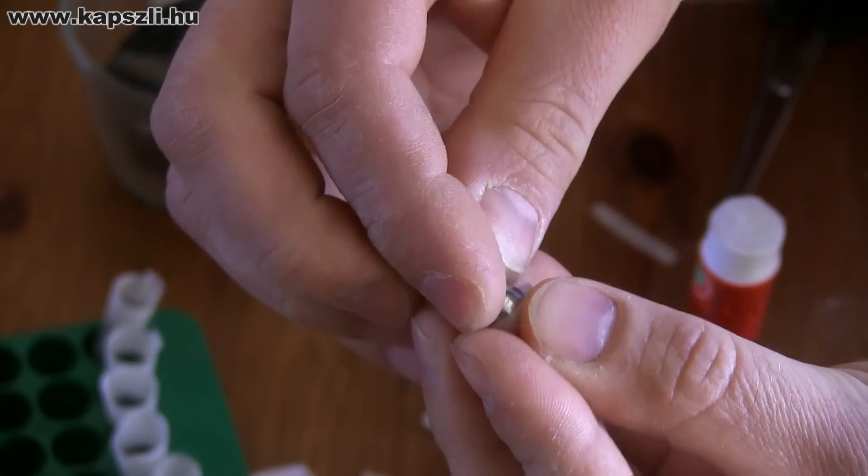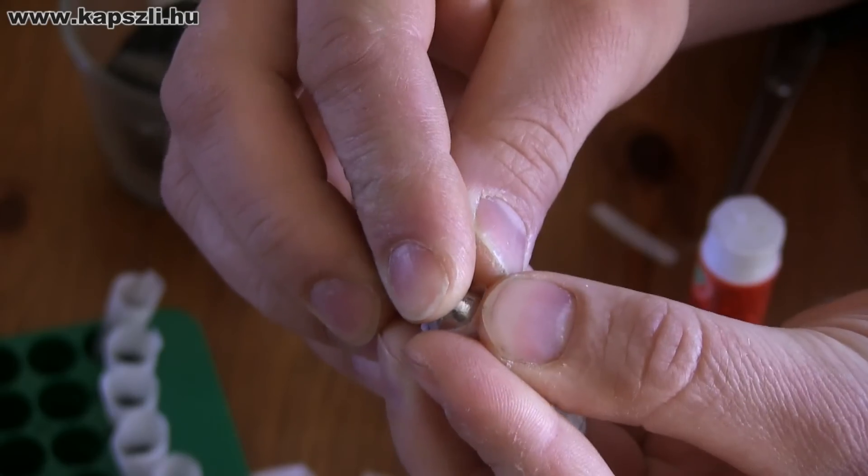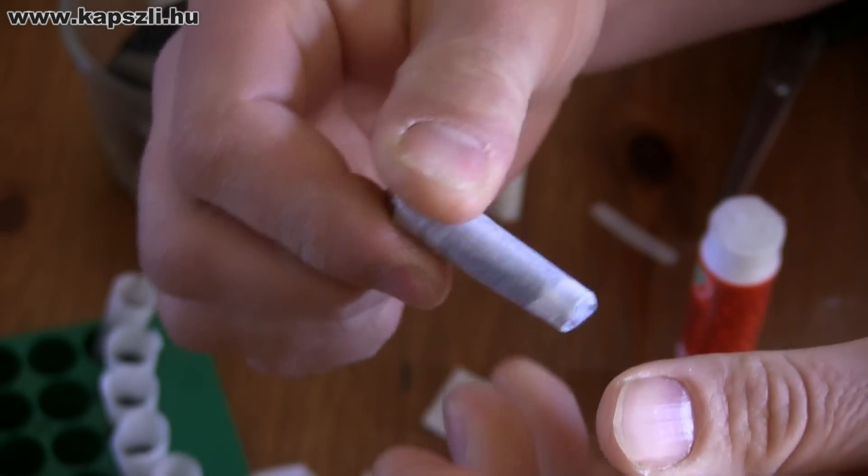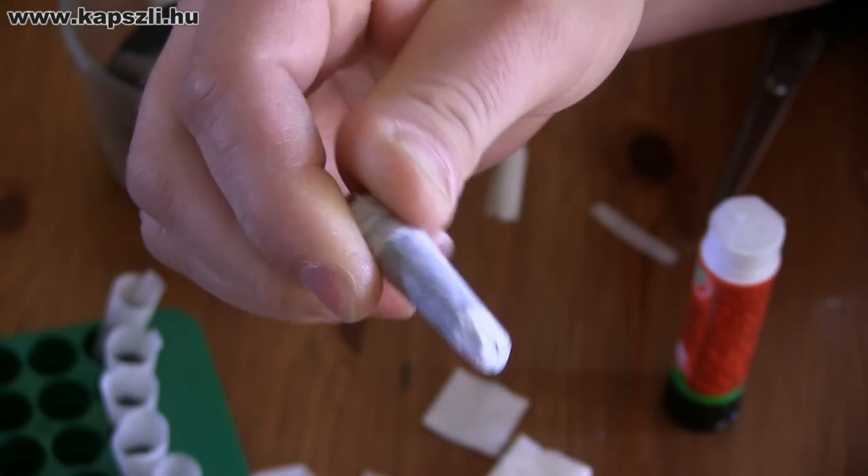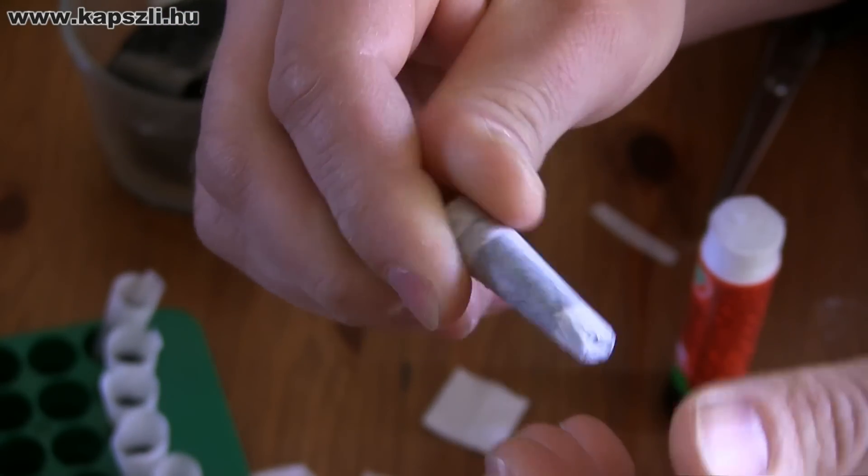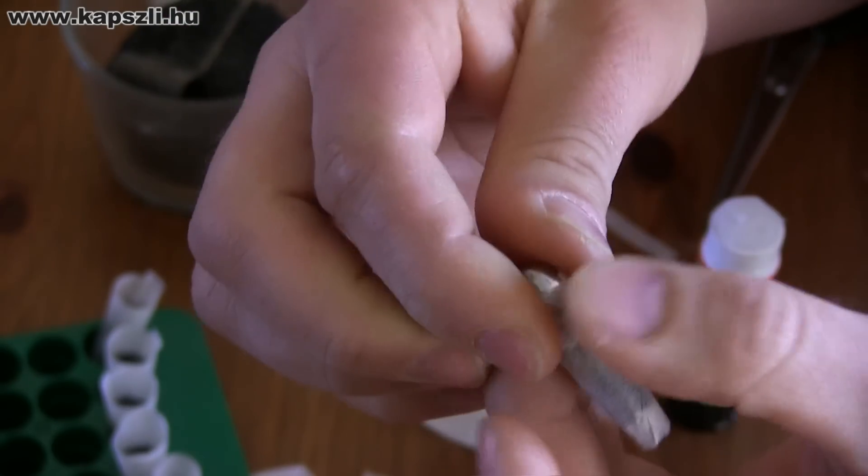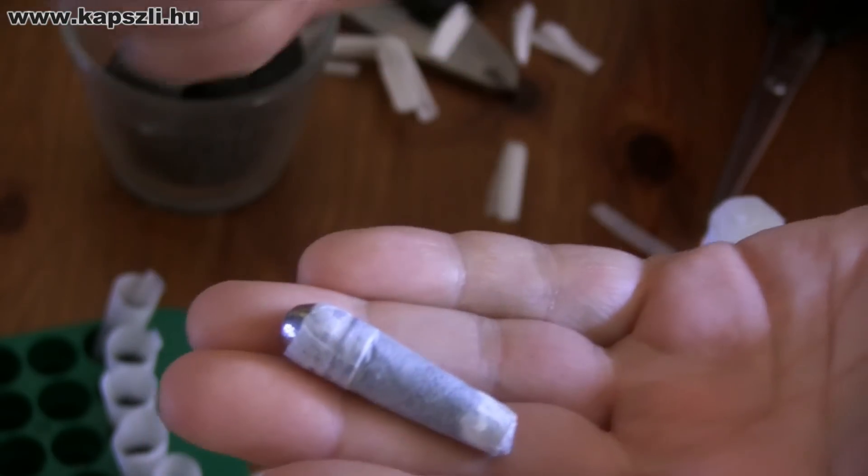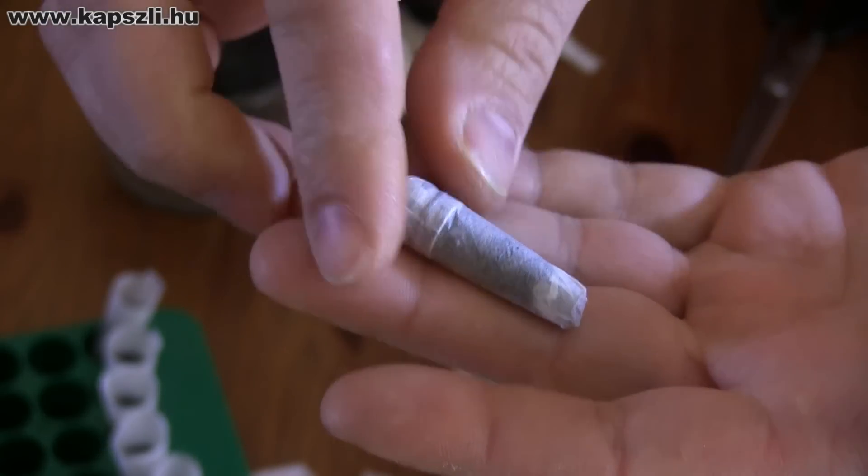When it sits firmly on the powder, roll the glued part between your fingers. And there you go, your cartridge is ready for boxing and later use at the range.